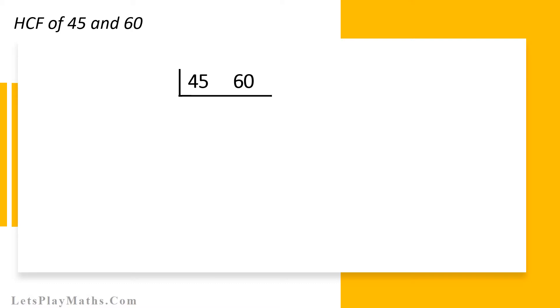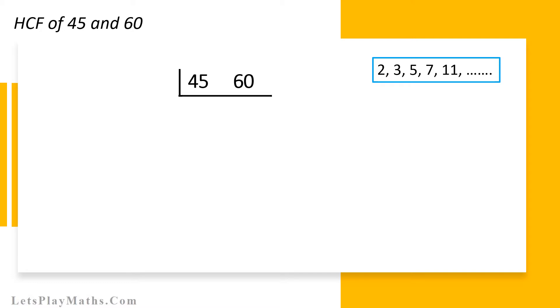Let's find out HCF of 45 and 60. First, we must find out the lowest prime number that can divide both 45 and 60. Here is a list of prime numbers from which we have to find the lowest prime number that will divide both 45 and 60. Both 45 and 60 cannot be divided by 2, but both can be divided by 3. Let's consider 3 as the lowest prime number.